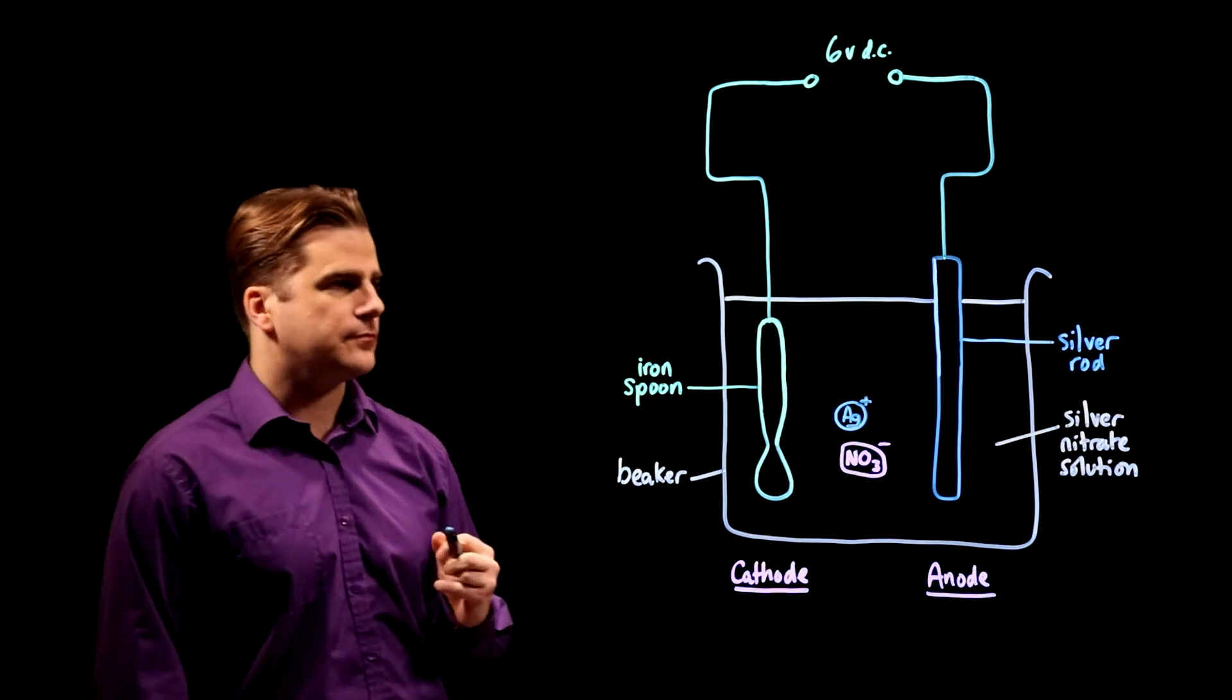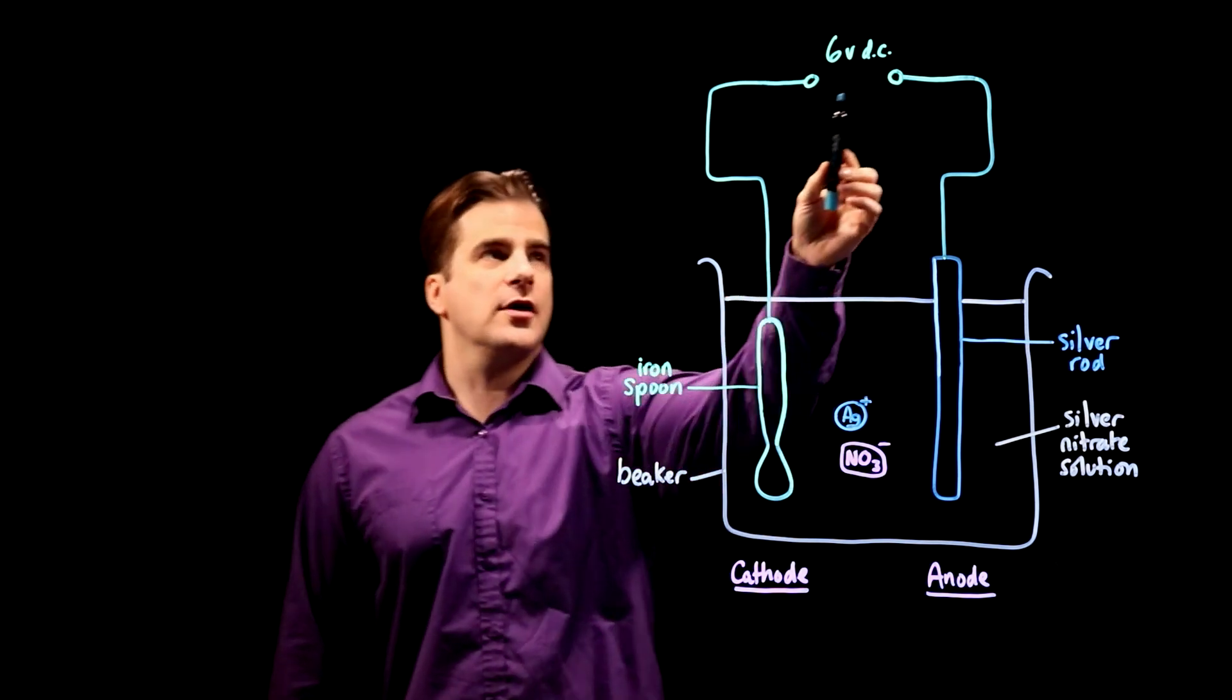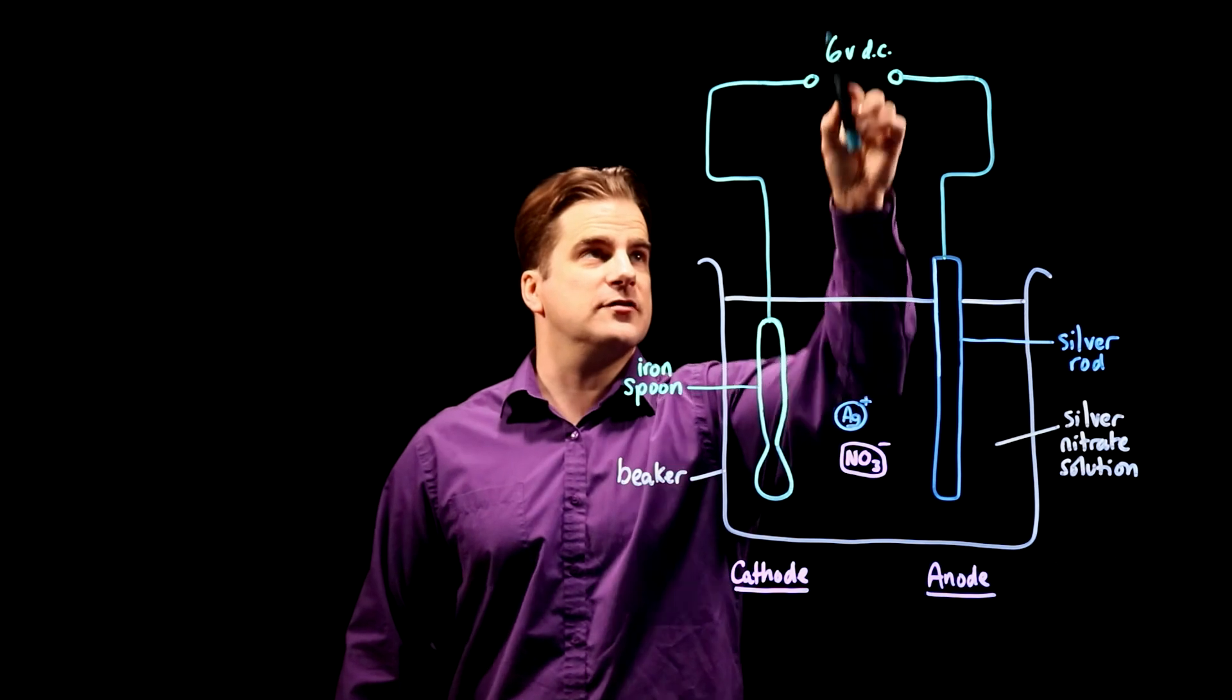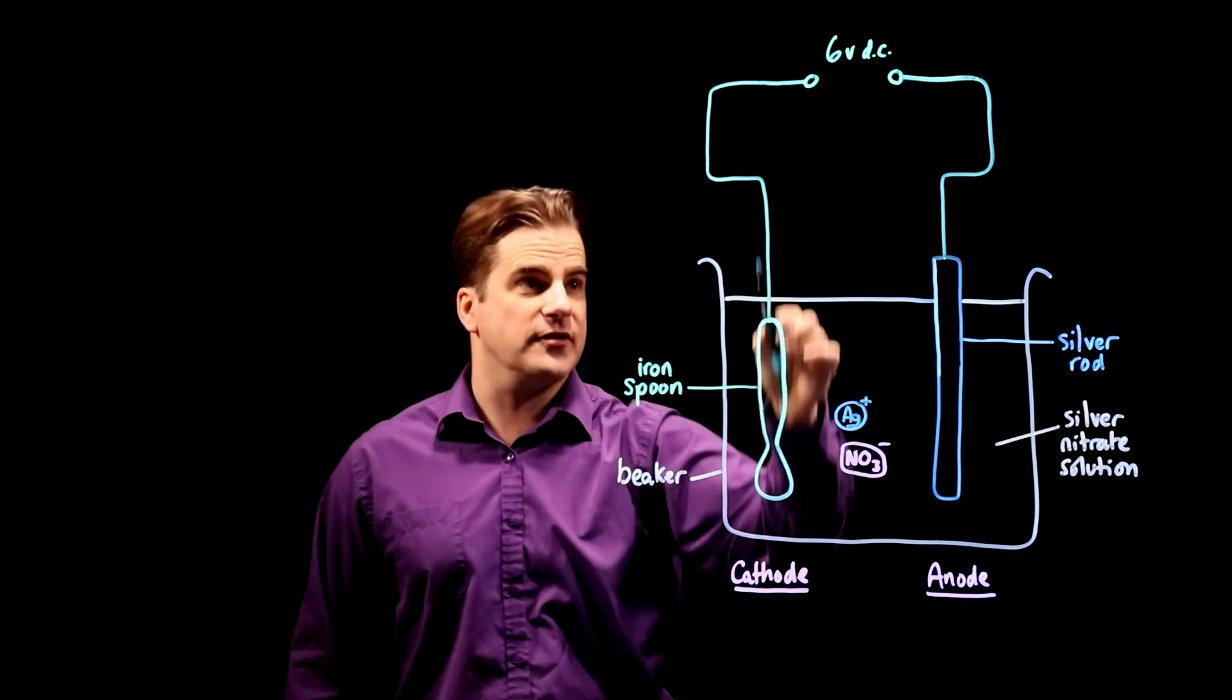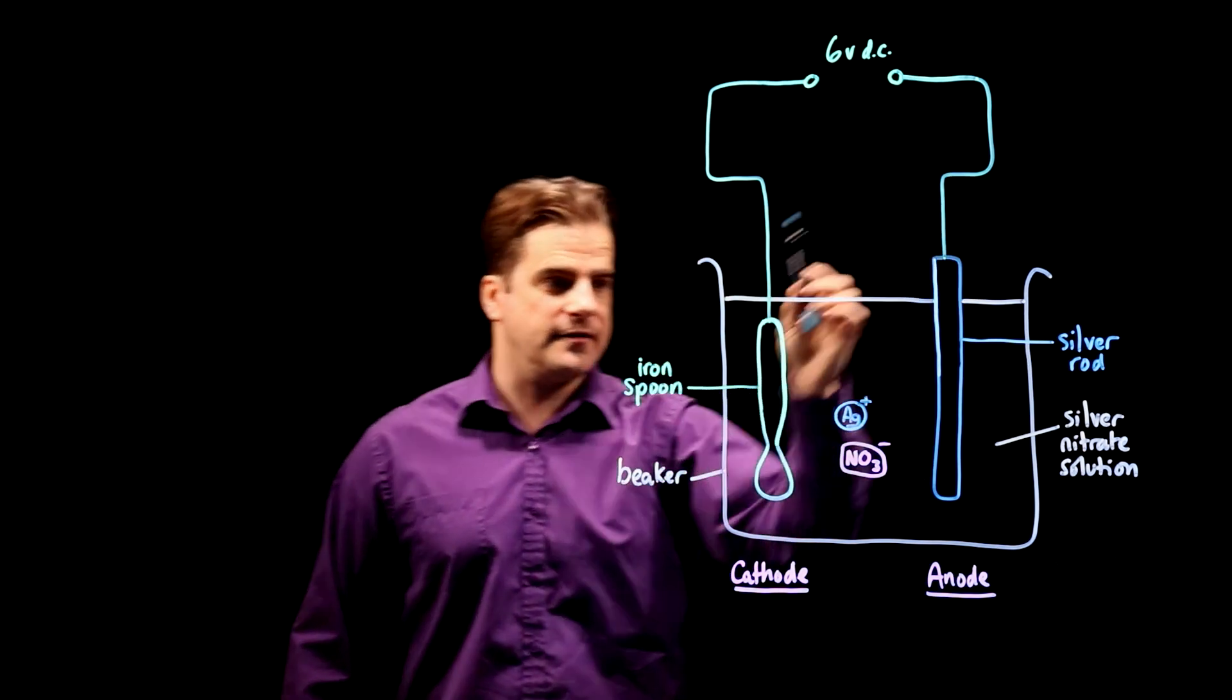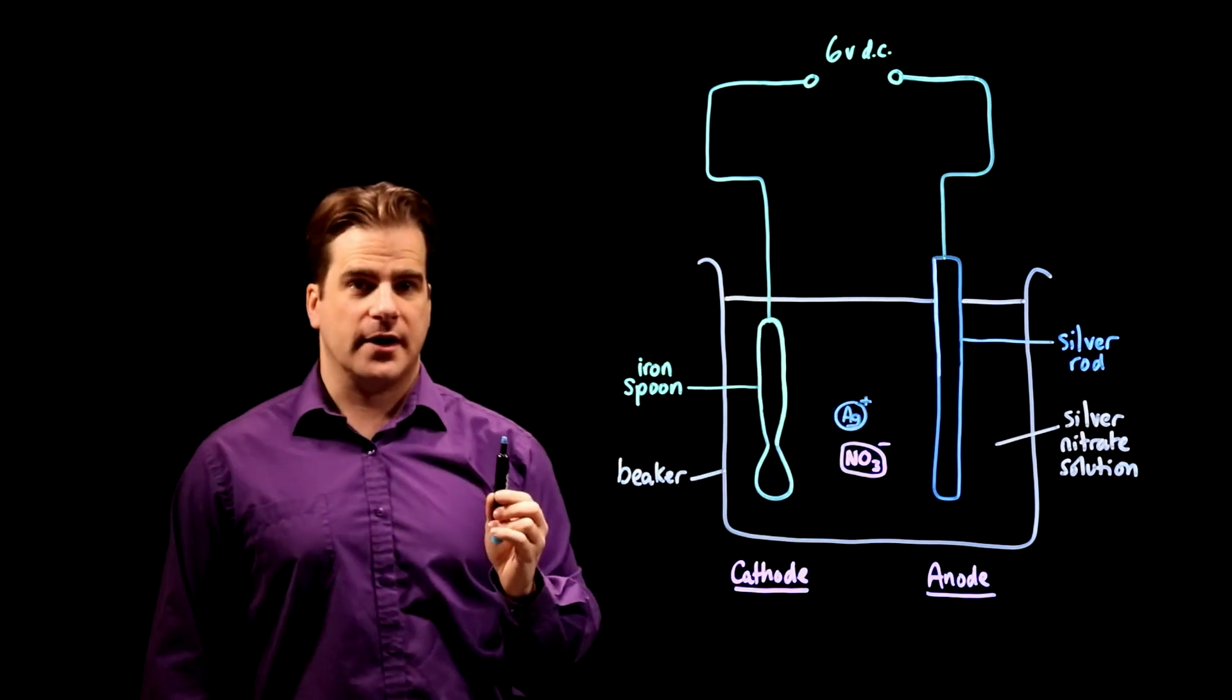Okay, right. They've told us we have a six volt DC supply but they haven't told us which way round the cell is connected so we don't know straight away which side is positive or negative. This is how you can work it out.